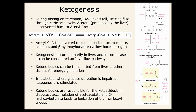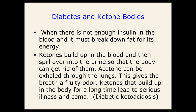Ketogenesis occurs primarily in the liver. During fasting or starvation, oxaloacetate levels fall, limiting the citric acid cycle. Acetyl-CoA is then converted to ketone bodies — acetone, beta-hydroxybutyrate, and acetoacetate. Ketone bodies are transported to other tissues, primarily the brain, as an alternative fuel. Excessive ketone bodies form ketoacidosis because they're carboxylic acids that have been deprotonated, decreasing the pH of blood.